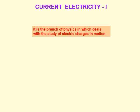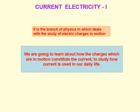Because of electric charge in motion, electric current is produced. We are going to learn about how charges in motion constitute the current, how current is used in our daily life, and how moving charges produce it.